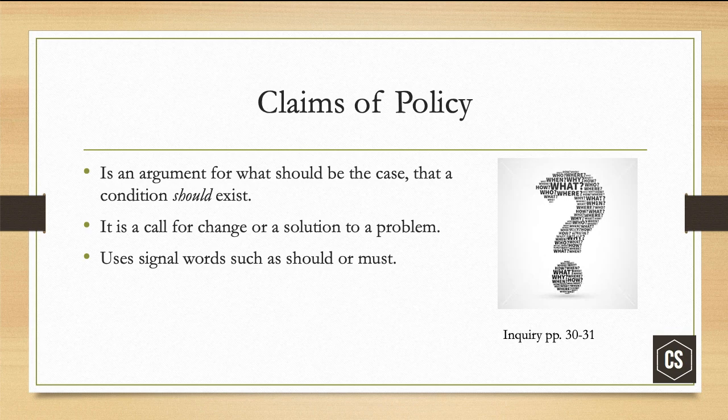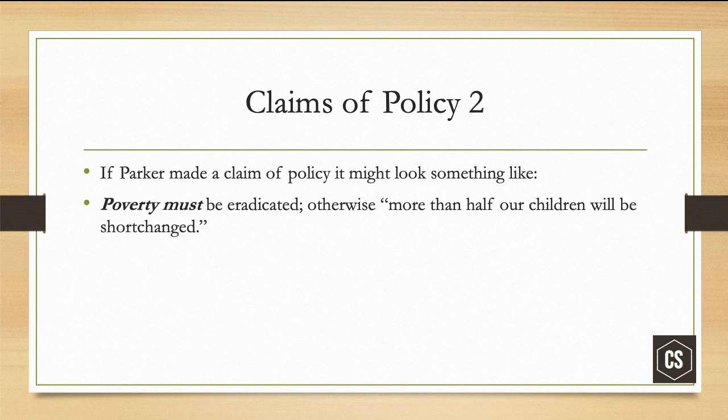A claim of policy is an argument that something should exist — it's a call for change or a solution to a problem. It uses signal words such as 'should' or 'must.' For example, 'Poverty must be addressed in this generation' would be a claim of policy. If Parker made a claim of policy, it might look something like 'Poverty must be eradicated — otherwise, more than half our children will be shortchanged.' That's a claim of policy because she's saying it must be eradicated, which means some sort of policy must be put in place to fix it.